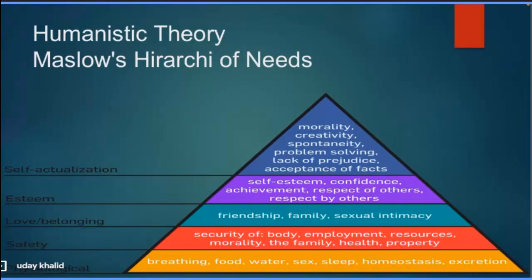At the base are physiological needs: breathing, food, water, sex, sleep, homeostasis, and excretion. Once these are achieved, the next need appears — security needs: physical security, employment, resources, morality, family, health, and property. These must be achieved before moving to the next level: love and belonging.